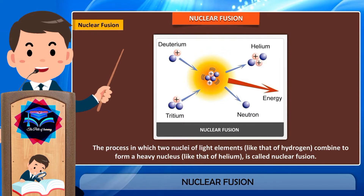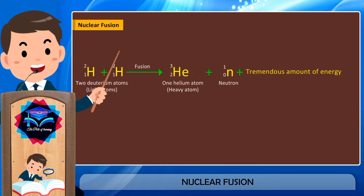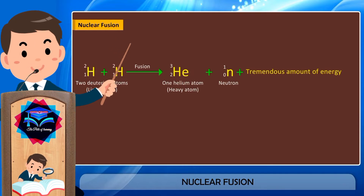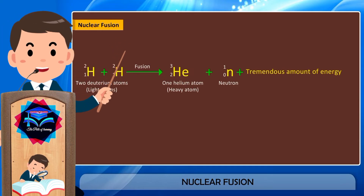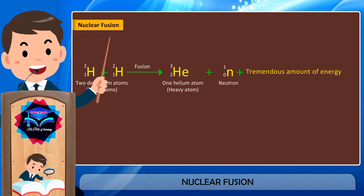Let us understand this with the nuclear fusion of deuterium. When deuterium atoms — heavy hydrogen atoms of mass number 2 — are heated to an extremely high temperature under extremely high pressure, two deuterium nuclei combine together to form a heavy nucleus of helium, and a neutron is emitted. A tremendous amount of energy is liberated in this fusion reaction.